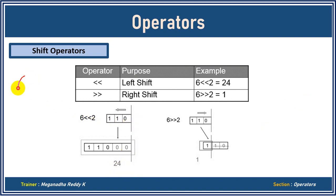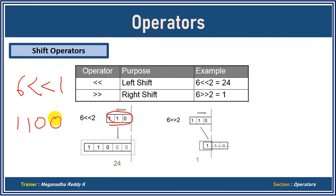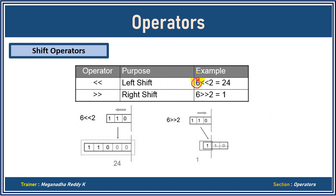For example, 6 left shift 1: 6 in binary is 0110, add one zero to get 01100, convert to decimal — that will definitely be greater than 6. Left shift always results in a number bigger than the original. For right shift, you remove right-side digits based on the value given. Since I gave 2, I remove two binary digits, and when I convert the remaining bits to decimal I get 1 — so 6 right shift 2 is 1.